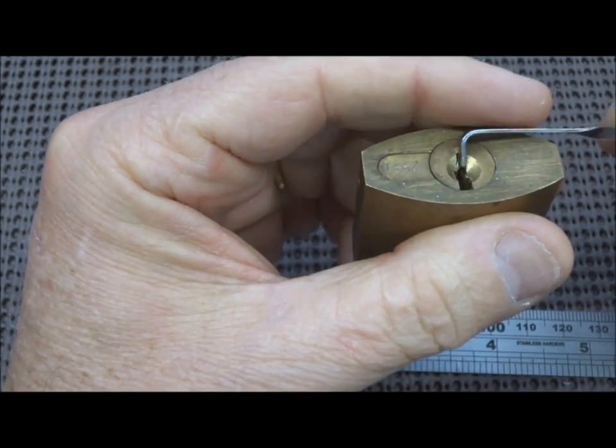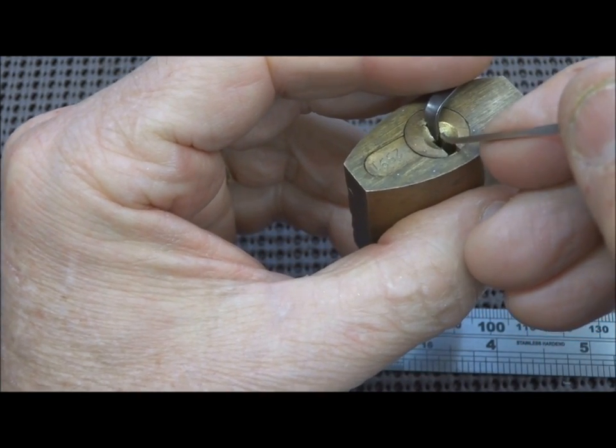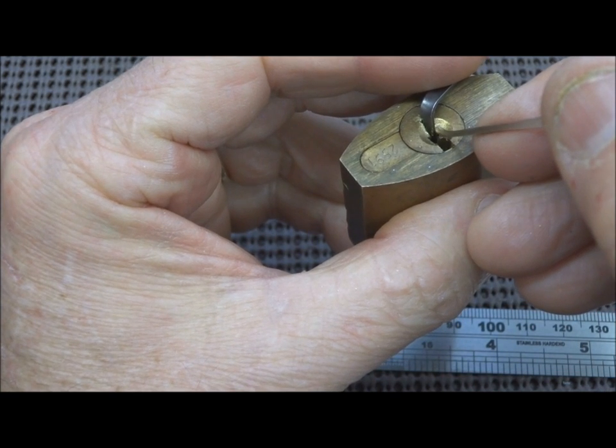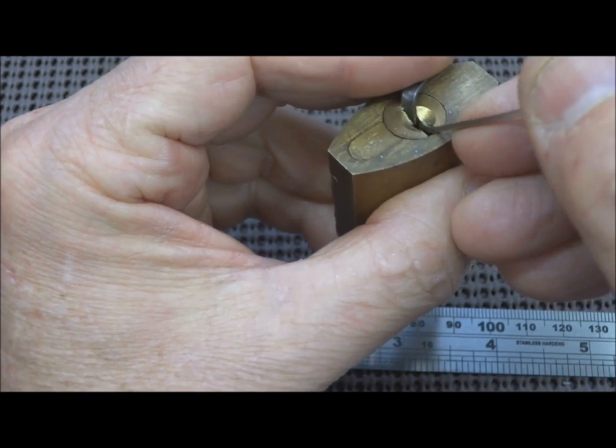He's right there at the very top. So when your pick is in, he's kind of right under... I'm sorry, your tension tool. He's right under the tension tool and there's nowhere on the top to get leverage.